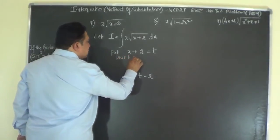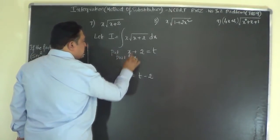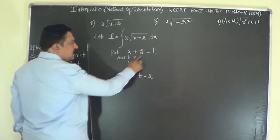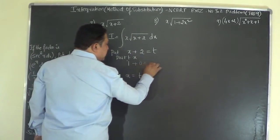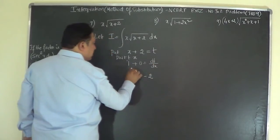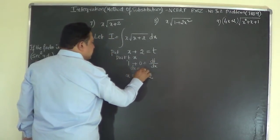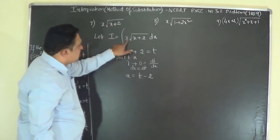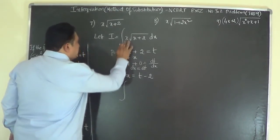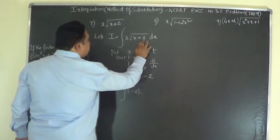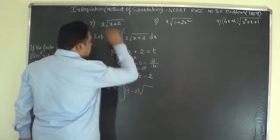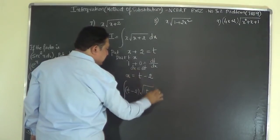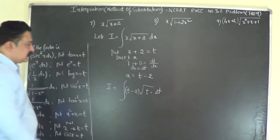Differentiating with respect to x: the differential coefficient of x is 1 and of 2 is 0, giving dx equal to dt. And x becomes t minus 2. So the integral becomes: replace x by (t minus 2), root of (x+2) becomes root of t, and dx becomes dt.